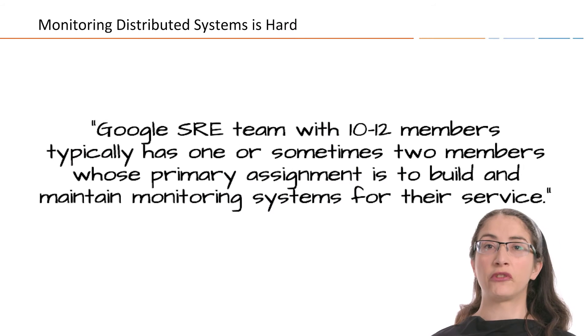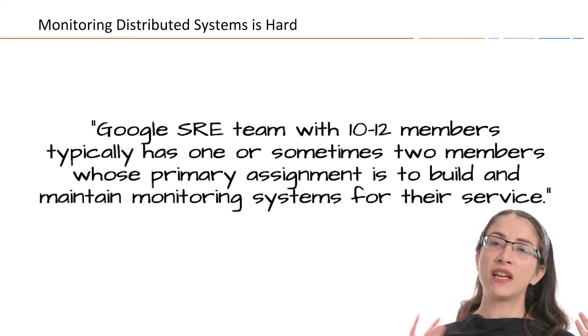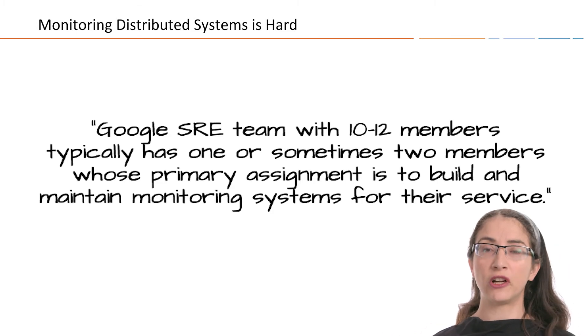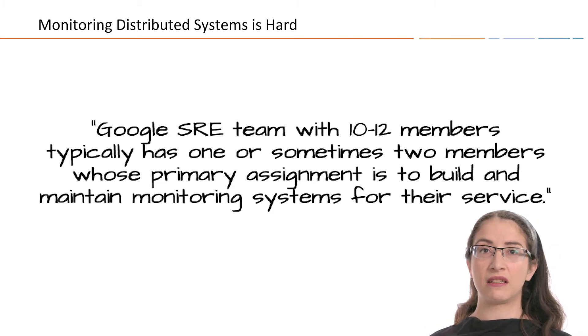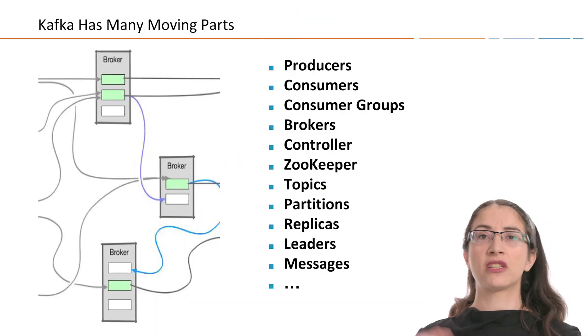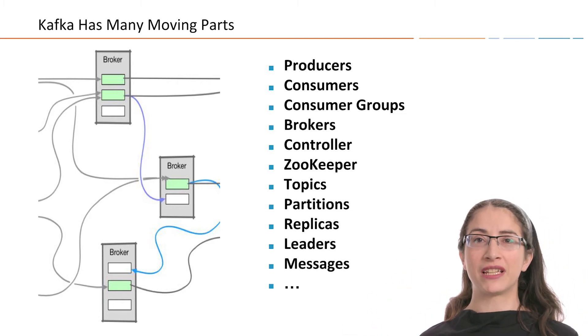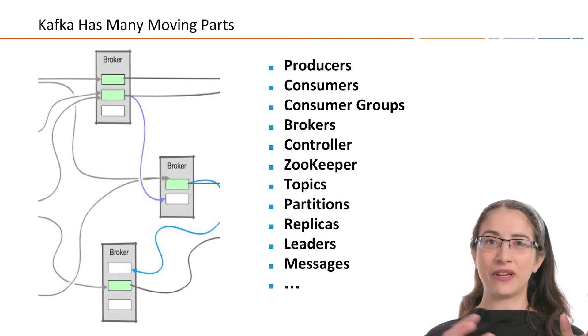One thing to keep in mind is that monitoring distributed systems — and Kafka absolutely is a distributed system — is quite complicated. It is not rare for a 10 to 12 person team to require someone who is full-time dedicated to monitoring. So if you're setting up your Kafka monitors and wondering why it's taking so much time and is so involved, remember that this is the normal experience. Monitoring distributed systems is a challenging problem for everyone. One of the reasons it's so challenging is that Kafka has a lot of parts: you have the producers, you have the consumers, consumers are organized in consumer groups, you have the brokers, one of the brokers is the controller, and they rely on ZooKeeper to do some critical things. So you have to keep an eye on ZooKeeper, not just Kafka.